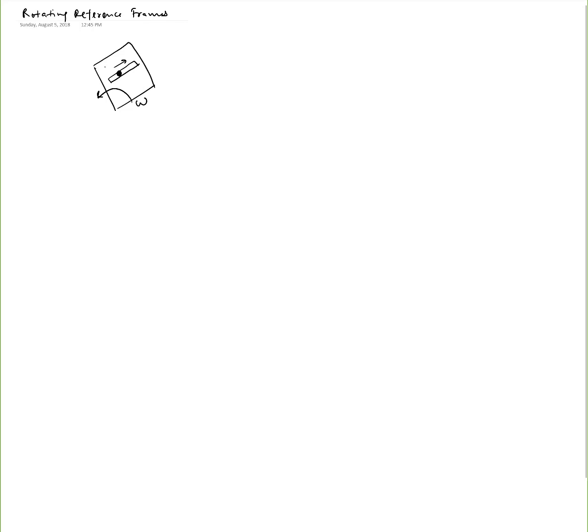Let's say we have a disk made out of some solid material with a slot cut inside it. Inside the slot there is a pin that is allowed to slide. The slot itself, which is inside this rigid body, is allowed to rotate with some angular velocity omega. If I want to write the absolute velocity of pin P with respect to a fixed reference frame, I would have to pick an absolute or fixed reference frame.